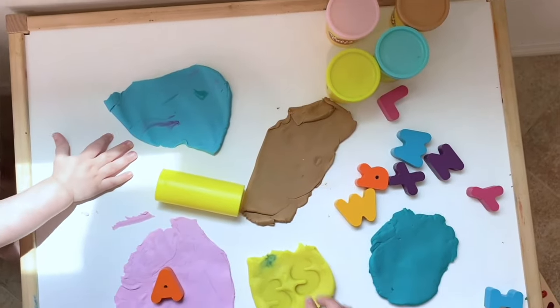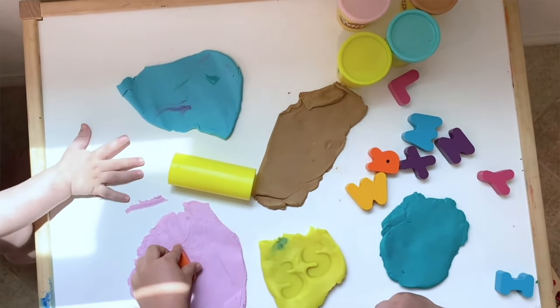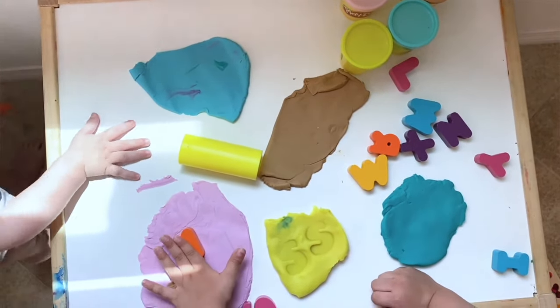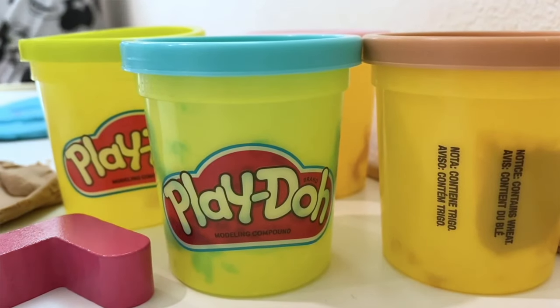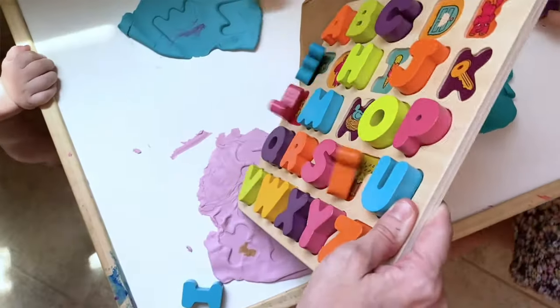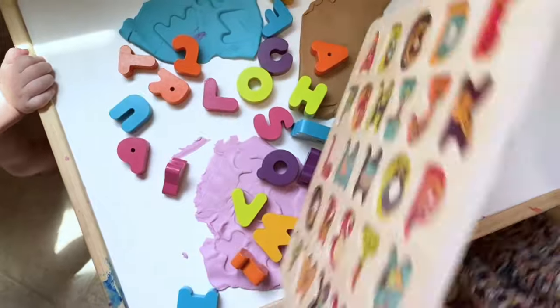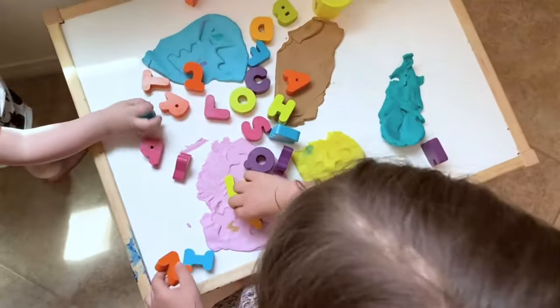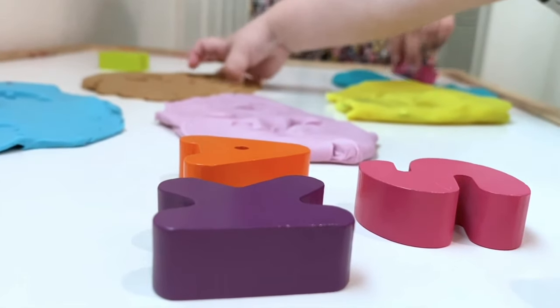Next is play-doh stamping. You'll need play-doh and letter manipulatives like magnet letters or puzzle piece letters. This one is super simple. Just flatten out the play-doh and have them stamp the letters into it. You can use this as an opportunity to go over letters and letter sounds, or you can put it out as an independent activity.